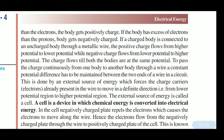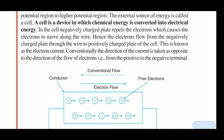The external source of energy is called a cell. The cell is a device in which chemical energy is converted into electrical energy. In the cell, the negatively charged plate repels the electrons, causing them to move along the wire from the negatively charged plate through the wire to the positively charged plate of the cell.